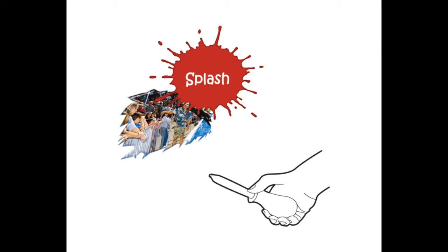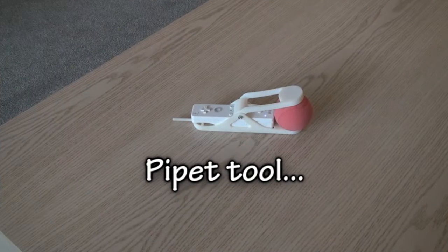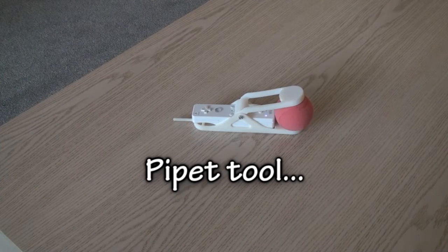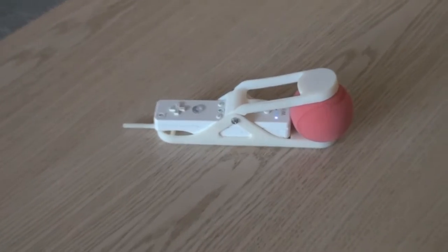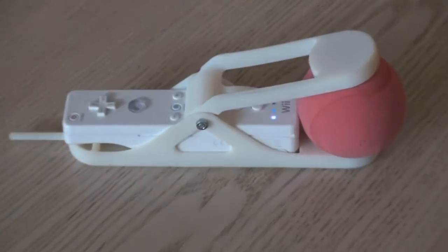Pipette is an innovative and intuitive interaction concept for cross-device interaction. It's a handheld remote used to suck pictures from the display of your digital camera or mobile phone and splash them on your TV screen. Here you can see the Pipette tool, using the pointing characteristics and the feedback mechanisms of the Wii Remote.